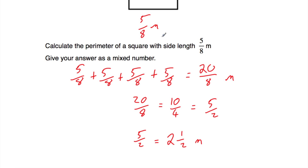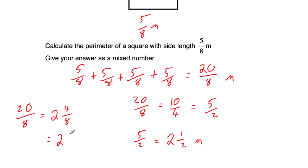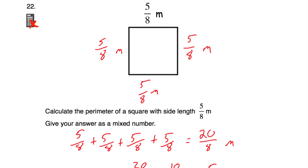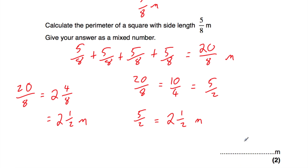Alternatively, starting from 20 eighths directly: how many 8s go into 20? That's 2 remainder 4 over 8, giving 2 and 4 eighths. Then 4 eighths cancels to 2 quarters or a half, giving 2 and a half metres. The perimeter of that square is 2 and a half metres.